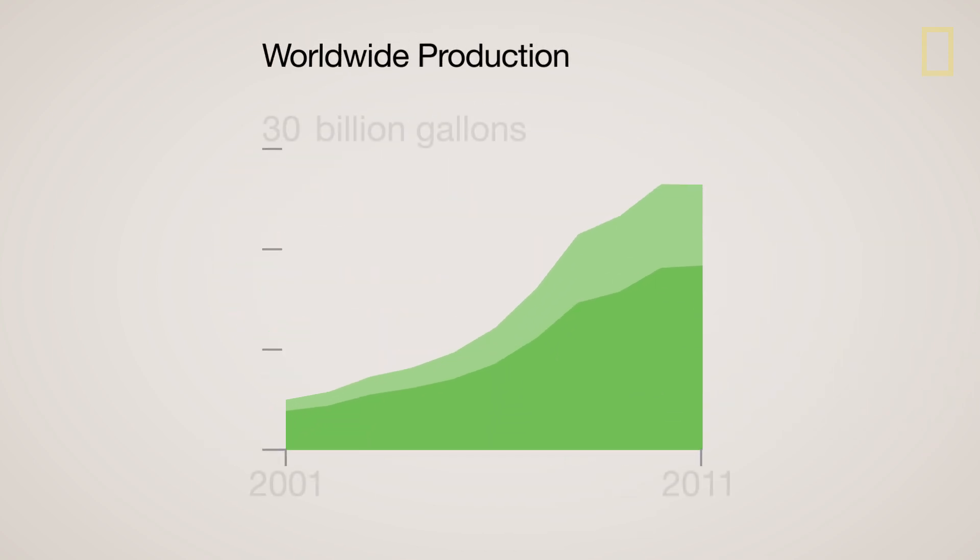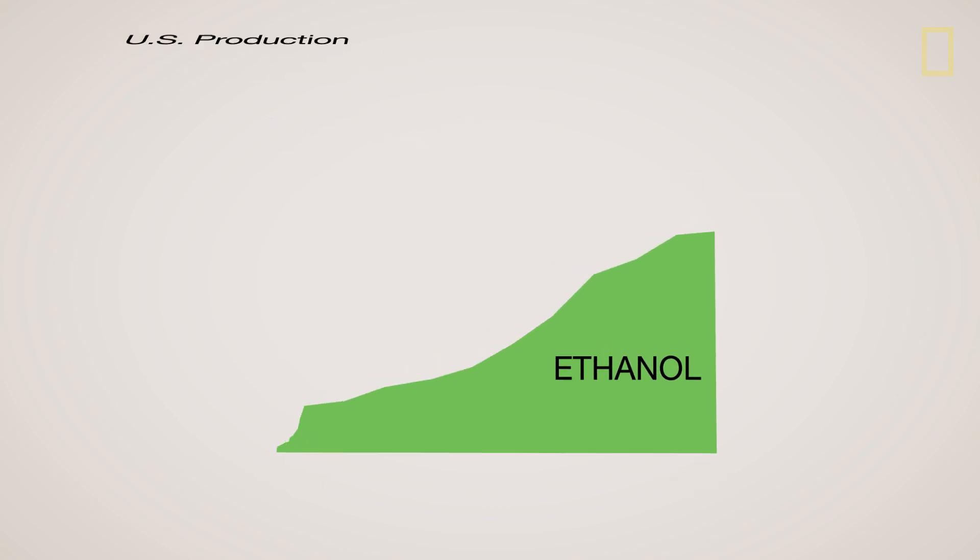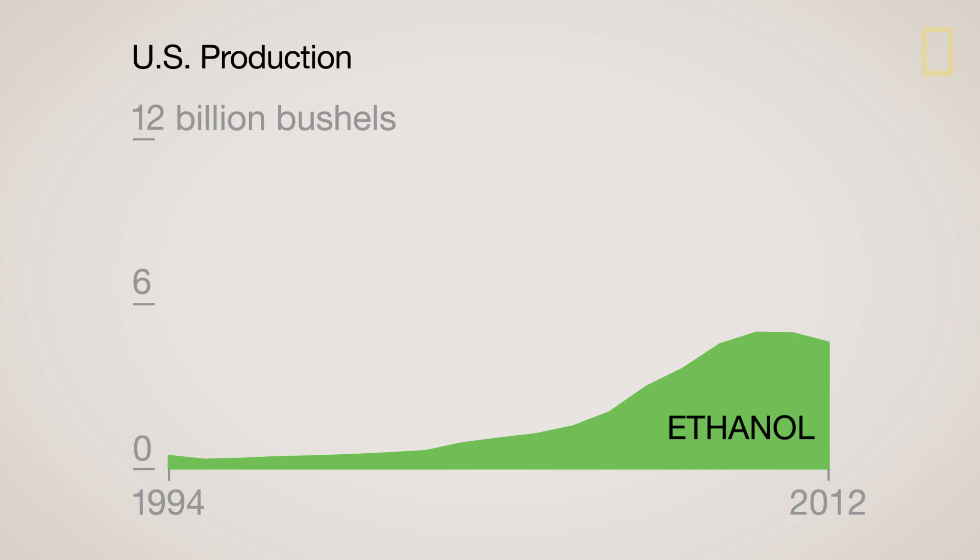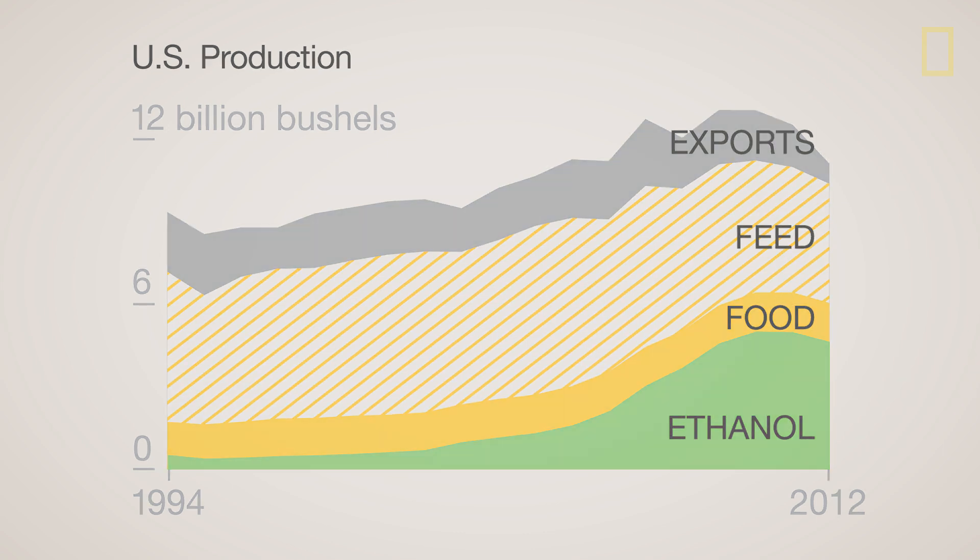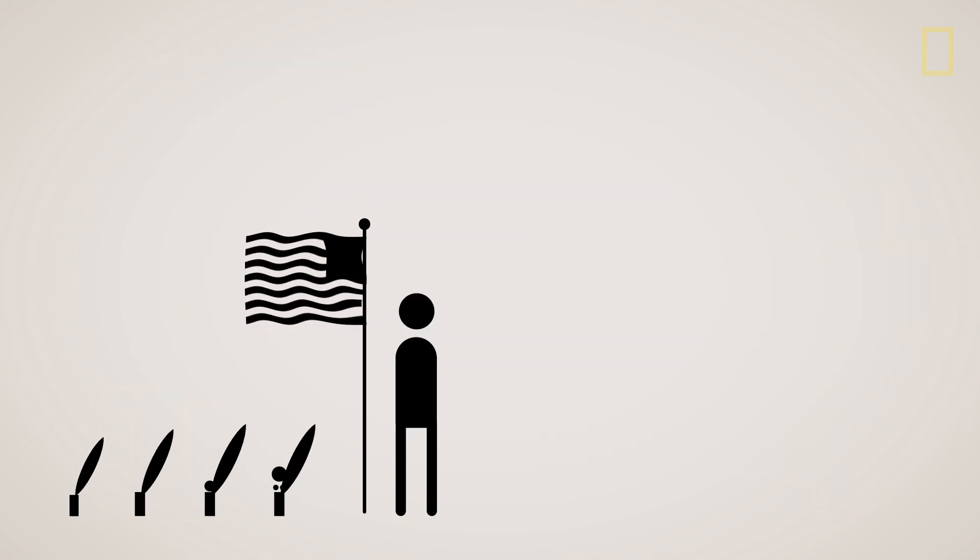In the past decade, worldwide biofuel production has increased five-fold. Most of that biofuel was ethanol, most of that ethanol was produced in the U.S., and most of that was derived from corn. All this growth has diverted a large percentage of the world's corn away from other uses, putting an even greater strain on the global food supply and making countries that rely heavily on imports more vulnerable.